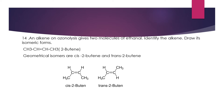Question 14: An alkene on ozonolysis gives two molecules of ethanal — identify the alkene and draw its isomeric forms. Since we get two identical molecules, the alkene is symmetrical. Two ethanal molecules means four carbon atoms in a symmetrical alkene, which is 2-butene. We can draw two geometrical isomers: cis-2-butene (both CH3 groups on the same side of the double bond) and trans-2-butene (CH3 groups on opposite sides).